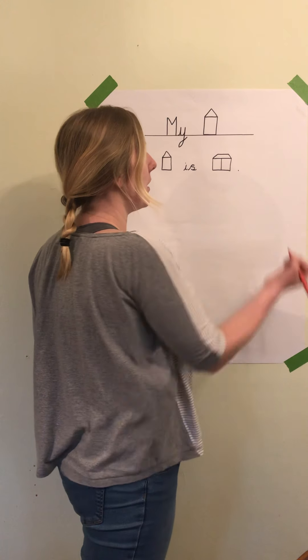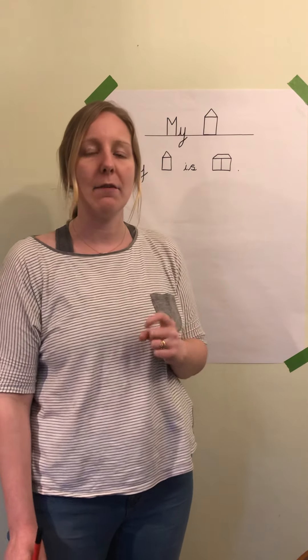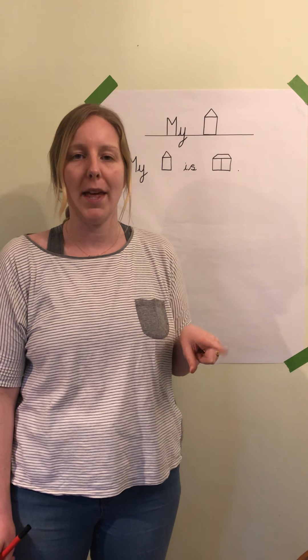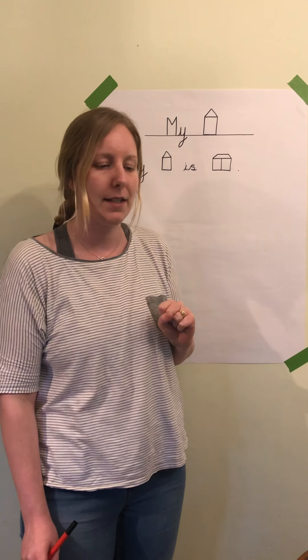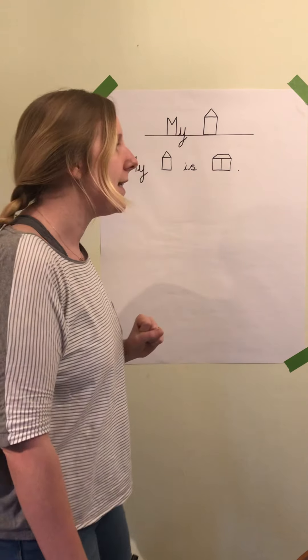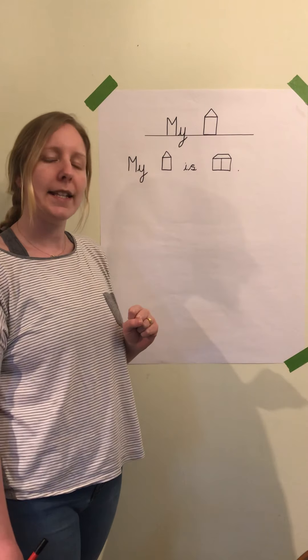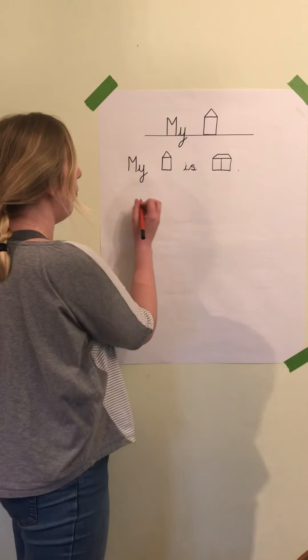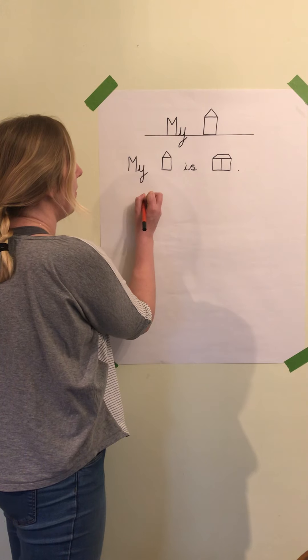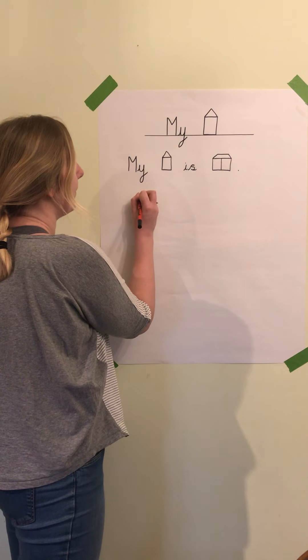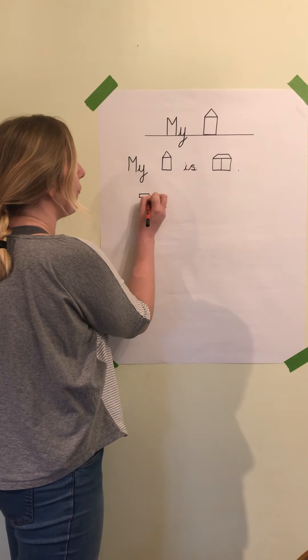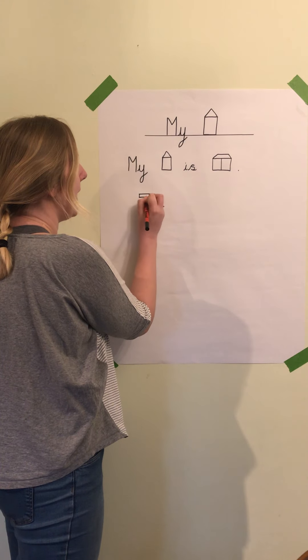Then I'm going to put a full stop at the end there because I'm going to need to put a full stop there when we're writing our sentence tomorrow. My next sentence is 'it has brick walls,' so brick walls. I'm going to draw some bricks to remind me.